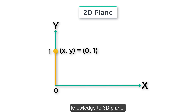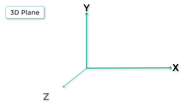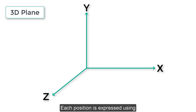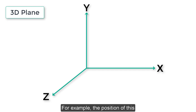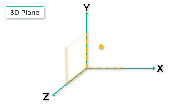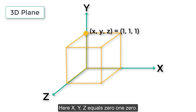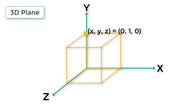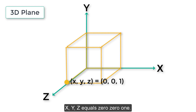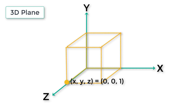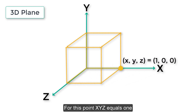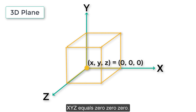Now let's extend our knowledge to the 3D plane. In a 3D plane, each position is expressed using three variables: X, Y, and Z. For example, the position of this point is (X, Y, Z) equals (1, 1, 1). Here (X, Y, Z) equals (0, 1, 0), this point is (0, 0, 1), for this point (X, Y, Z) equals (1, 0, 0), and the origin is (X, Y, Z) equals (0, 0, 0).